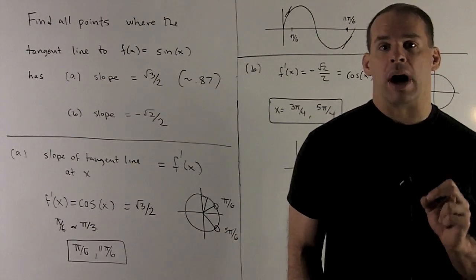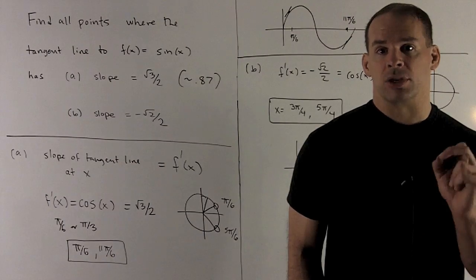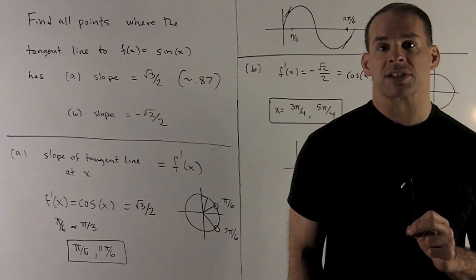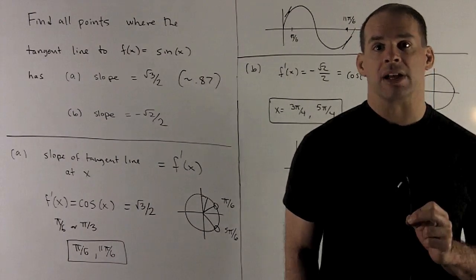If I want to wind up in the fourth quadrant for our other point, that's going to be the point 11 pi sixths. So that's going to be our answer.